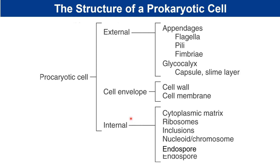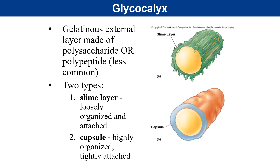Over here, prokaryotic cell is spelled with a C, which is a little outdated at this point. Both spellings are acceptable, but since the year 2000, most textbooks use the letter K for prokaryotic, so we'll stick with that. Working from the outer layers of the cell inward, we'll start with the glycocalyx.